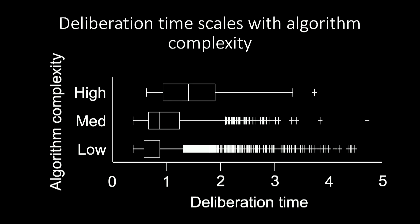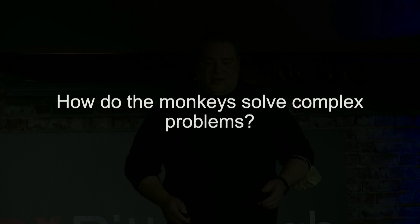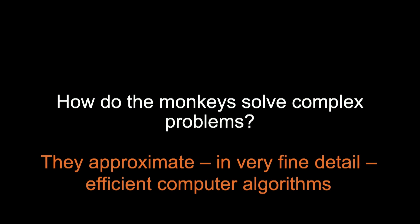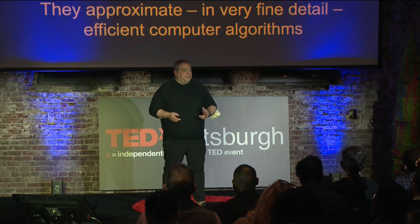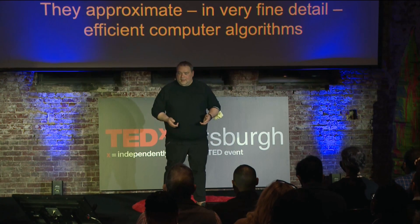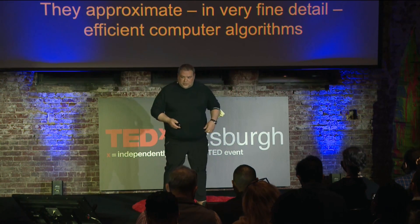On the y-axis we've separated trials into low, medium, and high behavioral solutions. We can see that the monkey invests more time in high complexity algorithms — searching for combinations. So the answer to how monkeys solve complex problems is that they approximate, in very fine detail, efficient computer algorithms. As the number of operations increases, the time spent deliberating increases. This relationship suggests that the algorithm in the brain is more than a metaphor — it's what the brain is actually doing.